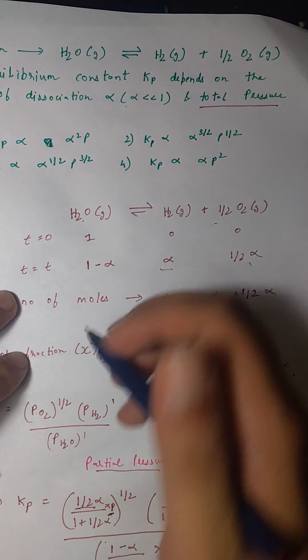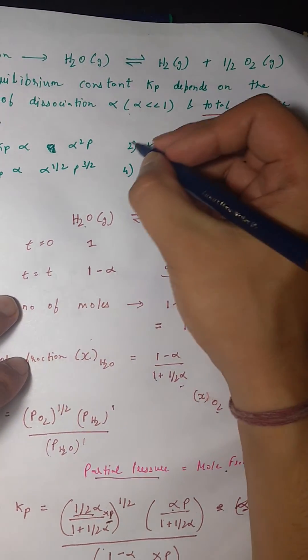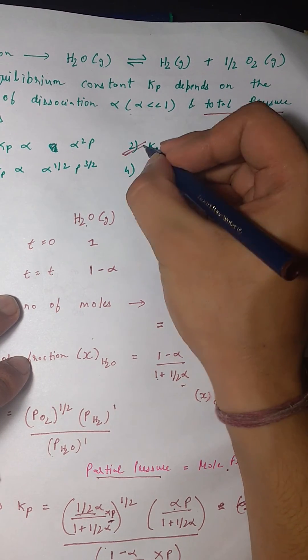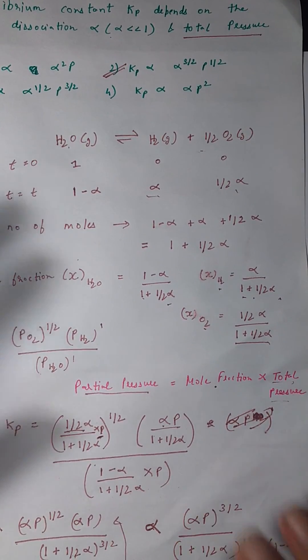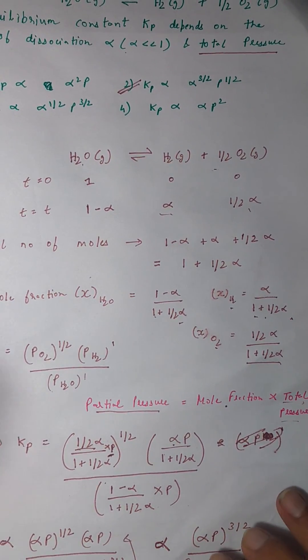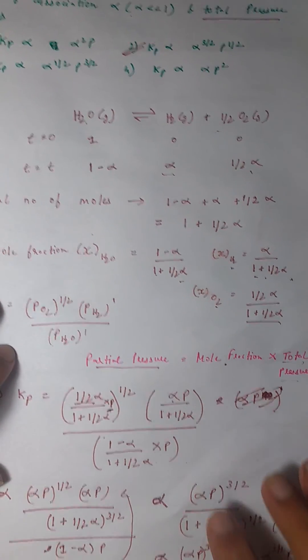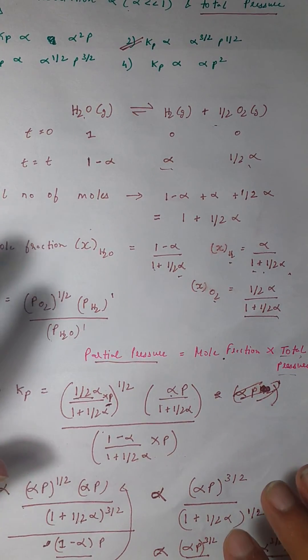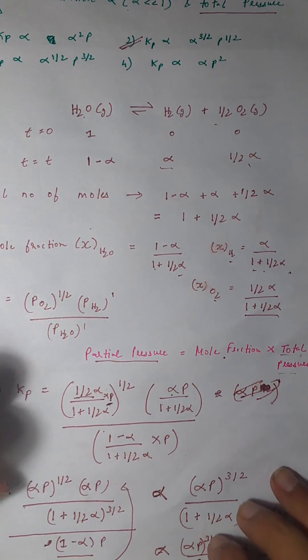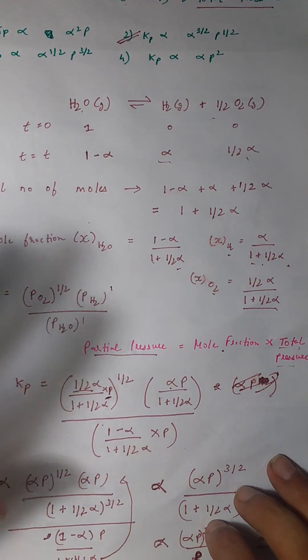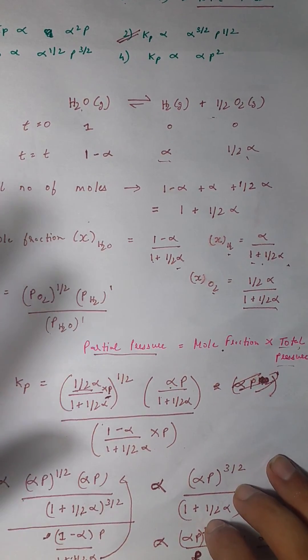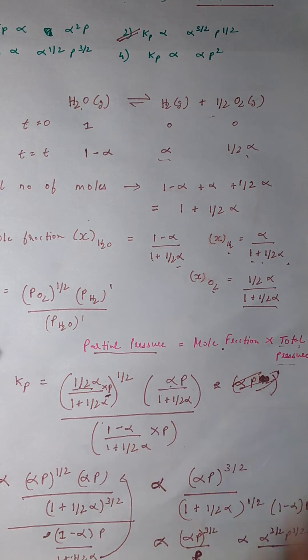So the second option is the correct answer. As you can see, even if you knew the concept, calculating this whole thing takes a lot of effort. Now I'll tell you the smart shortcut method.